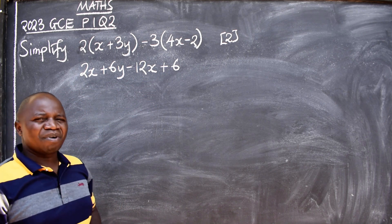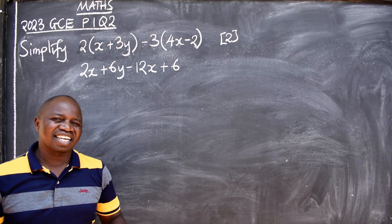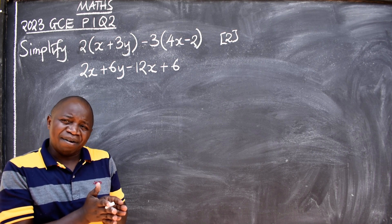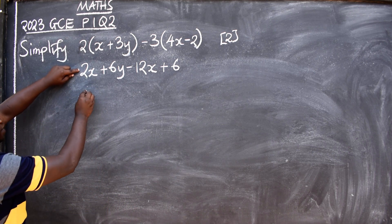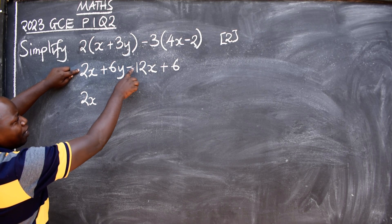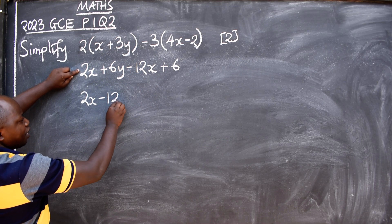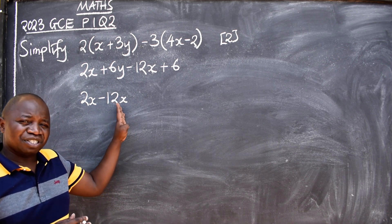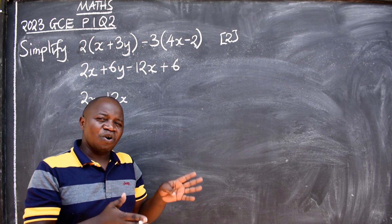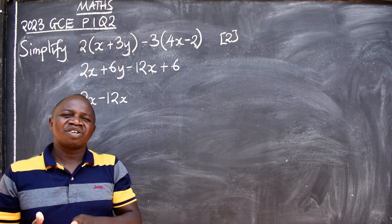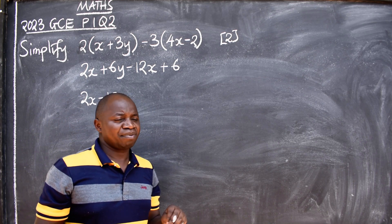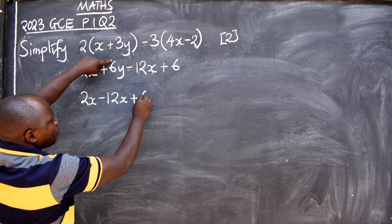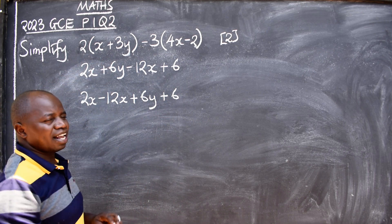The next step is collection of like terms. Those that have got x, let them be together. We have 2x here and the other pair is negative 12x. There will be no change of sign here — this is an expression and in algebra you only change the sign when you are dealing with equations. So we have plus 6y then plus six.